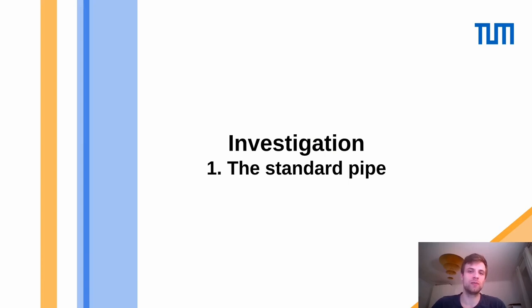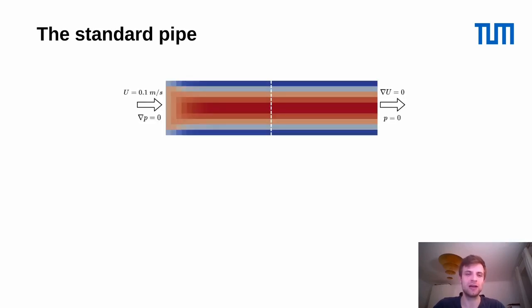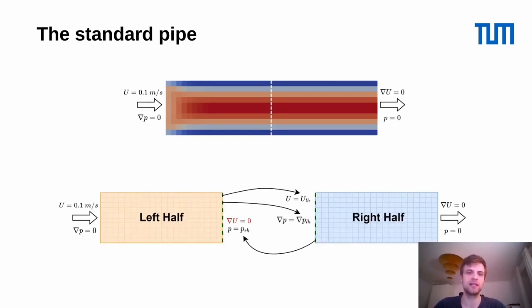The fluid-fluid module of the OpenFOAM adapter already existed when I started my master's thesis, but it was not really tested much — it was only in a rudimentary state. So I investigated this module using several test cases. The first is a simple standard pipe scenario: a simple 2D pipe with a very coarse mesh. At the left we have an inlet with 0.1 meters per second velocity and a zero-gradient pressure. On the right we have the outlet boundary conditions of zero velocity gradient and zero pressure. This pipe is simply cut in the middle into the left half and right half — the two participants in our coupled simulation — creating an additional coupling interface where we set the boundary conditions via preCICE.